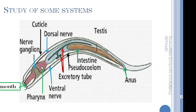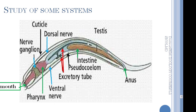The digestive system in Ascaris is complete because it contains the mouth and the anus. Starting from the mouth located on the anterior side, we find the pharynx, then the intestine. The intestine ends with the second opening which is the anus. So the digestive system is complete: mouth, pharynx, intestine, and anus.